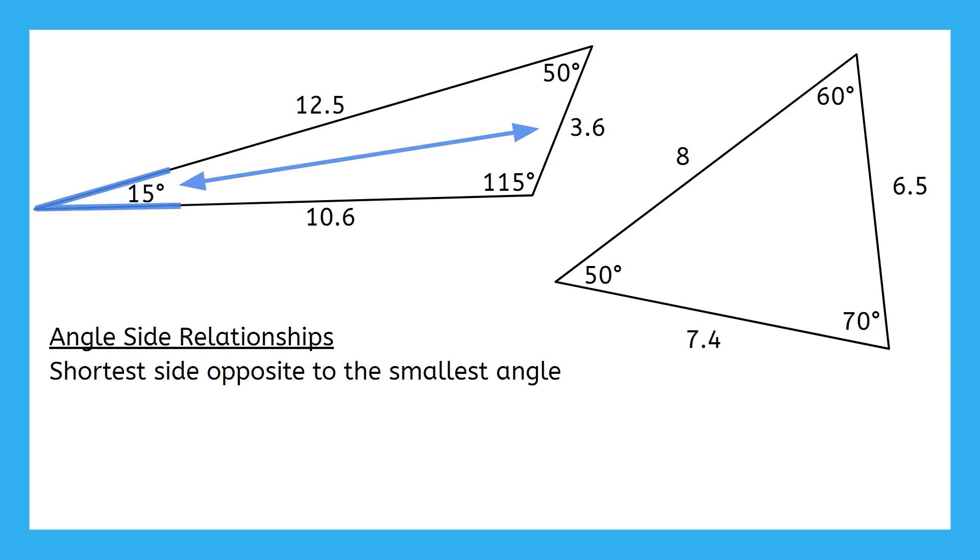And in the second triangle, 50 degrees is the smallest angle, and it's opposite to 6.5, which is the shortest side of this triangle.